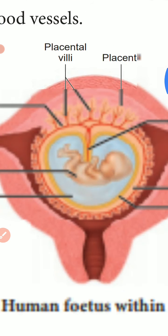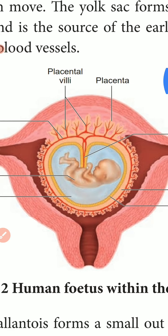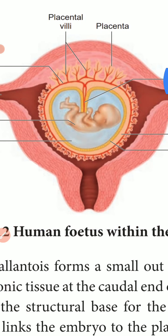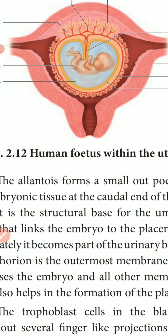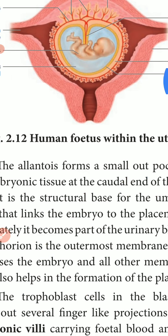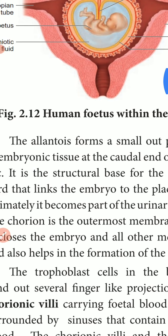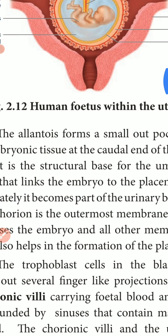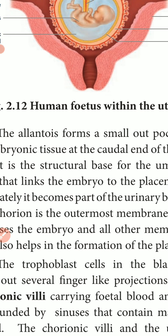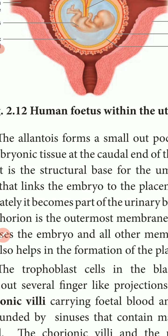Chorionic villi and uterine tissue together form a disc-shaped placenta. The placenta is a temporary endocrine organ found during pregnancy; it connects the fetus to the uterine wall through the umbilical cord. It is the organ by which nutritive, respiratory, and excretory functions are fulfilled.